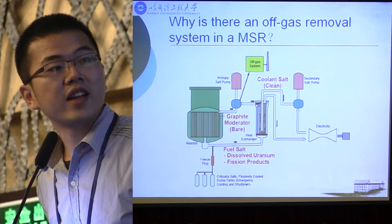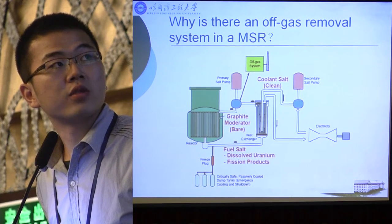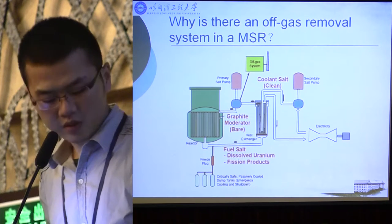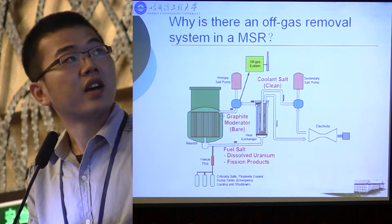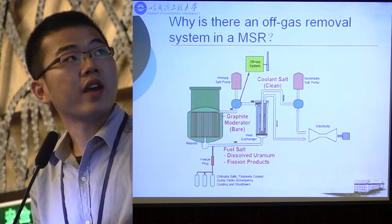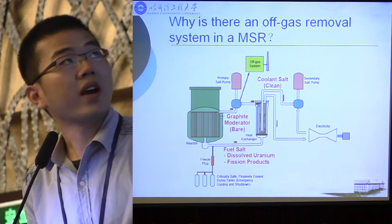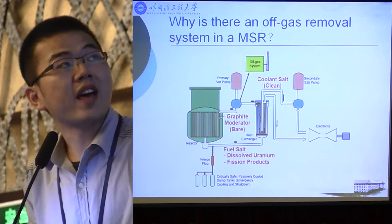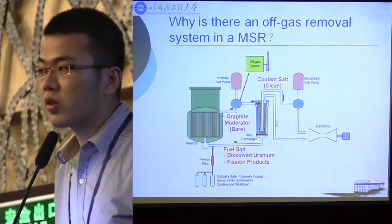Unlike the PWRs, the molten salt reactor has a unique off-gas system, as the yellow area shows. So why is there an off-gas remover system in the MSR and what is the use of it?